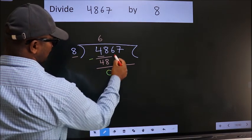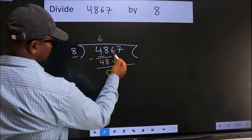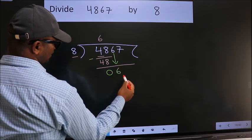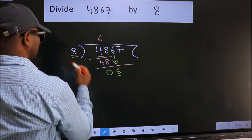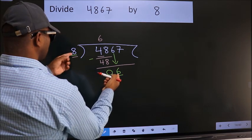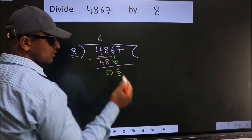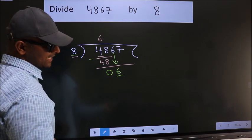After this, bring down the beside number. So, 6 down. Here we have 6, here 8. 6 is smaller than 8. So we should bring down the second number.